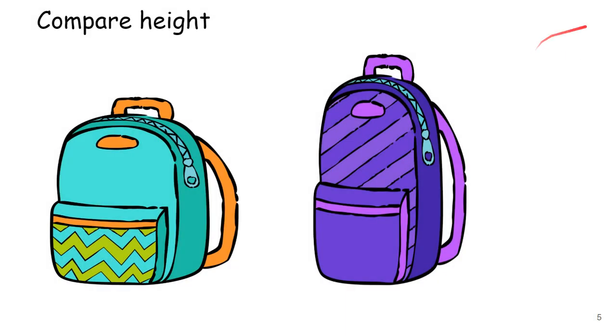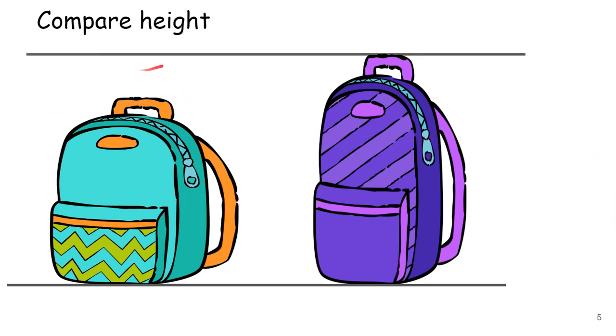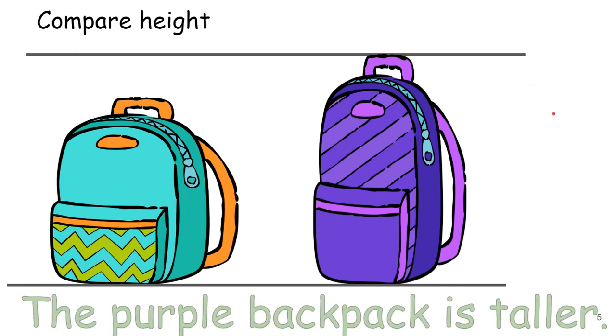When we compare height, we have to make sure that we're measuring the right way. We have to make sure that we're starting at the bottom to measure. So see how this line is touching both of the bottoms of the backpacks. And then we go all the way to the top. So now we can see that the purple backpack is taller, right? Because this one does not go up to that line.